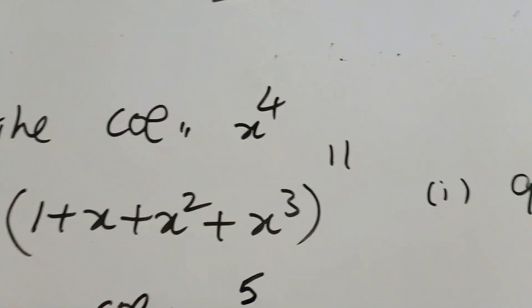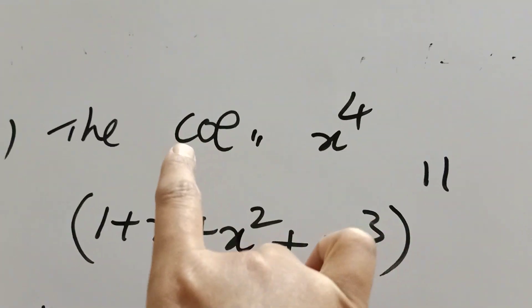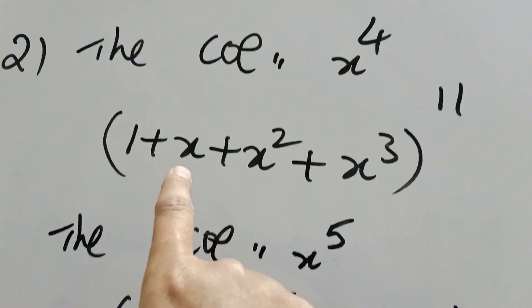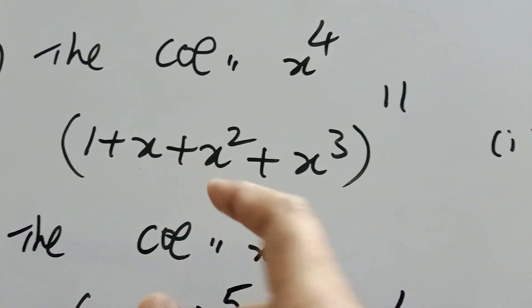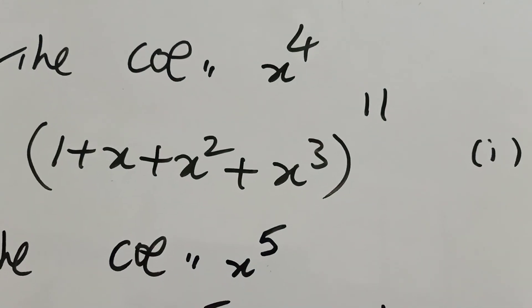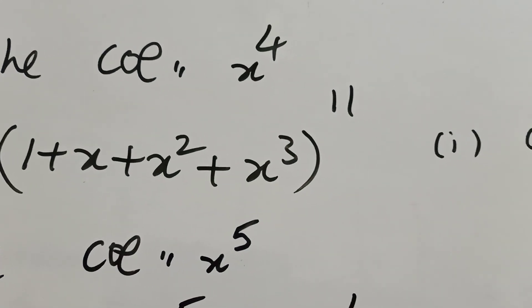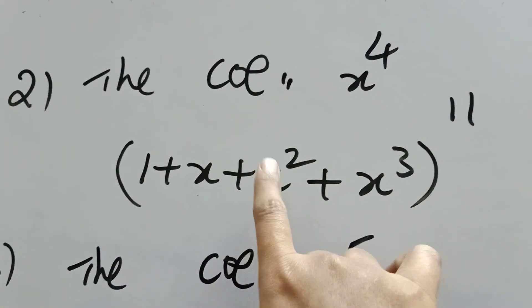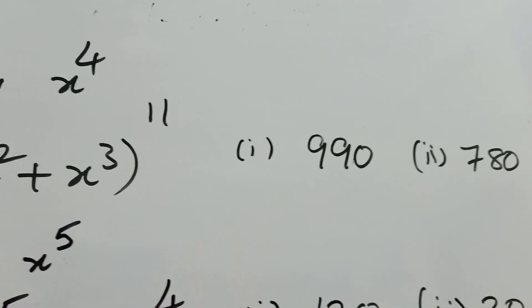The second problem: find the coefficient of x power 4 in (1 plus x squared plus x squared) whole power 11. Find the factors for x power 7 and split the sessions — work the same way as this model.